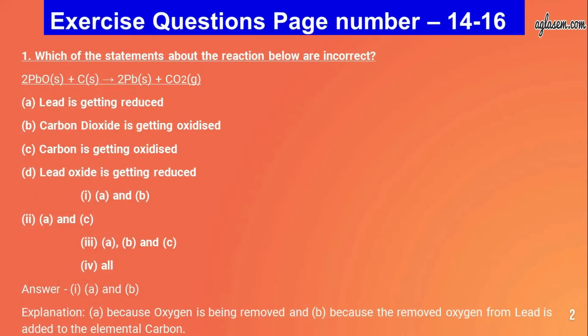Exercise Question page number 14 and 16. Question number one: which of the statements about the reaction below are incorrect? The reaction is: 2PbO + C → 2Pb + CO₂. The options are: A - lead is getting reduced, B - carbon dioxide is getting oxidized, C - carbon is getting oxidized, D - lead oxide is getting reduced. The answer is A and B, because oxygen is being removed from lead and added to elemental carbon.